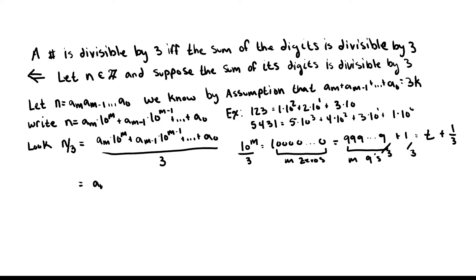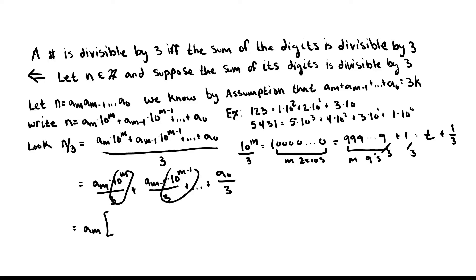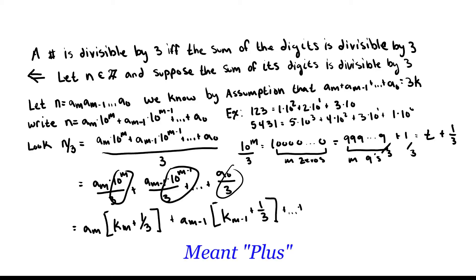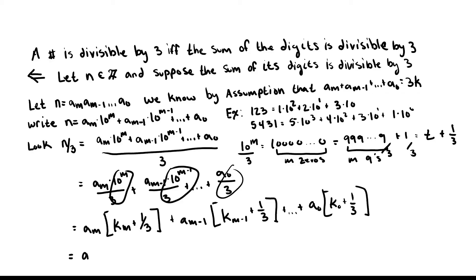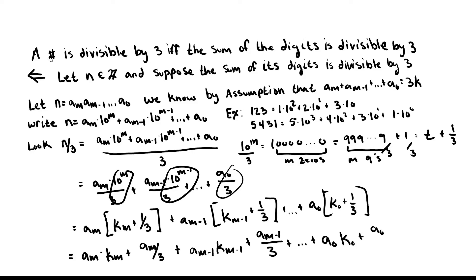We can break up n/3 as a_m × 10^m / 3 + a_{m-1} × 10^{m-1} / 3 + ... + a_0 / 3. Each 10^m / 3 gives some integer plus one-third, so each term becomes a_m × k_m + a_m/3, plus a_{m-1} × k_{m-1} + a_{m-1}/3, all the way down to a_0 × k_0 + a_0/3, where each k_m is an integer.